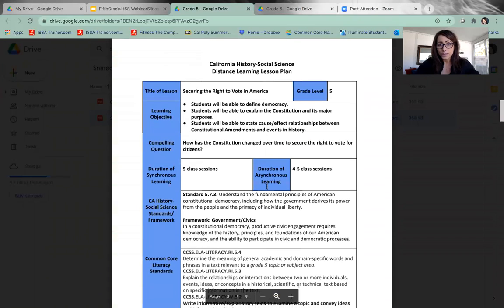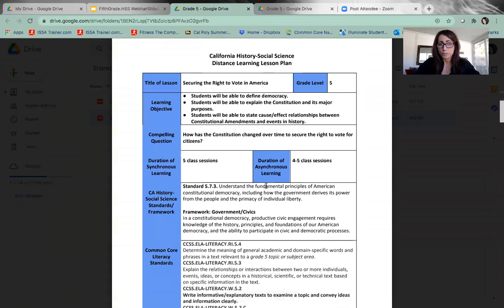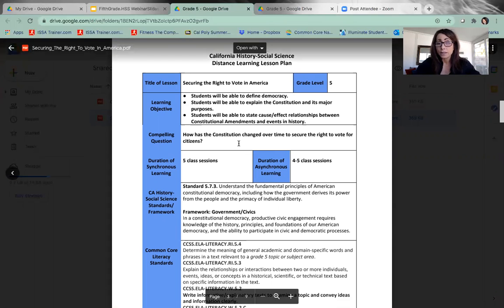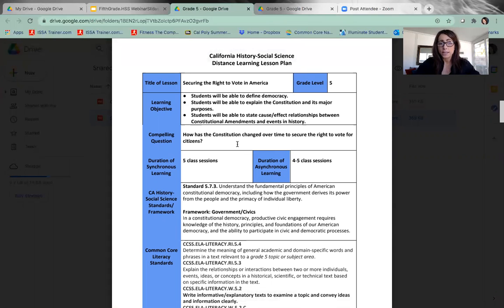As we head into the lesson there's a blue section which is basically background information for the teacher. Pay special attention to the learning objectives and the compelling question. In this lesson the compelling question, the overarching question, is how has the constitution changed over time to secure the right to vote for citizens?